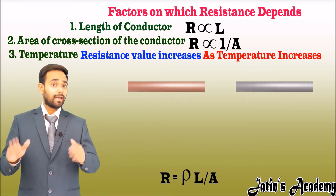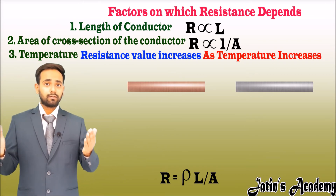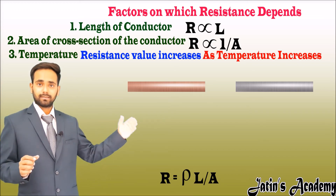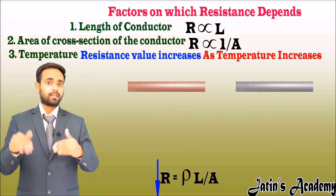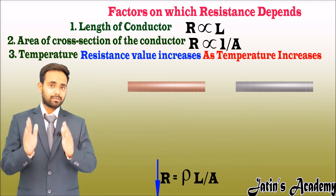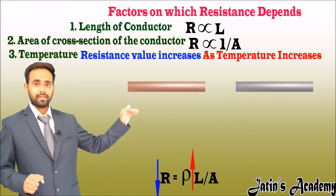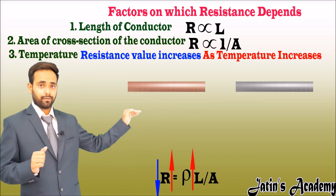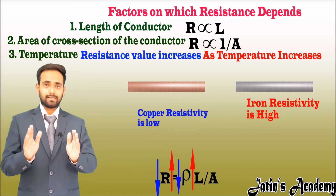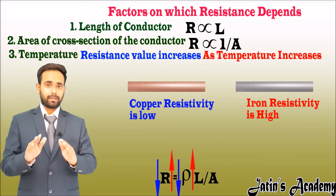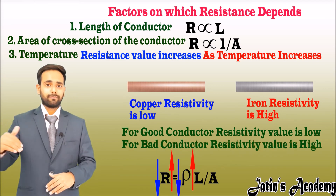Now let's see the significance of the value rho, that is resistivity. For example, we have two wires of the same length and same cross-sectional area — one made from copper and another made from iron. Copper is a good conductor, meaning its resistance value is less. The term which signifies that copper is a good conductor and iron is not is resistivity. If the resistivity value is high, the resistance value is high for that material. So for iron, resistivity is more, and for copper, resistivity is less. For good conductors, resistivity value is low, and for bad conductors or insulators, resistivity value is high.